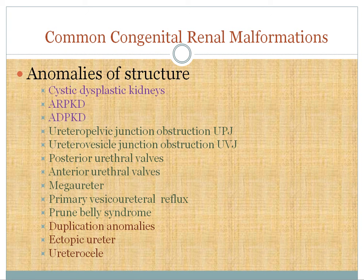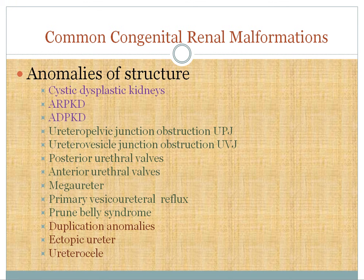Primary vesicoureteral reflux is very commonly seen in outpatient pediatric nephrology. It is the commonest cause of urinary tract infection in females, while posterior urethral valve is the commonest cause in males — a board exam point. Other anomalies include Prune-Belly syndrome, duplication anomalies, ectopic ureter, and ureterocele.